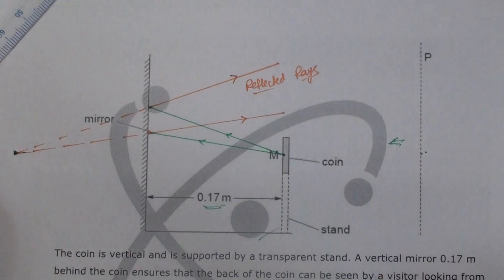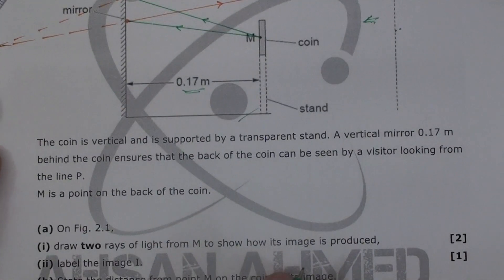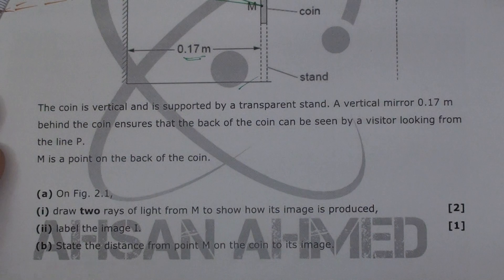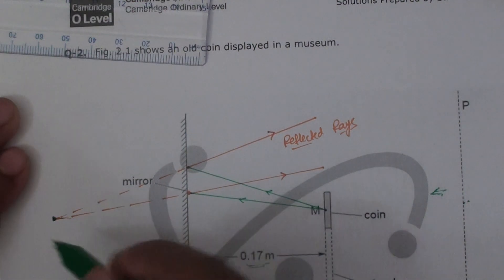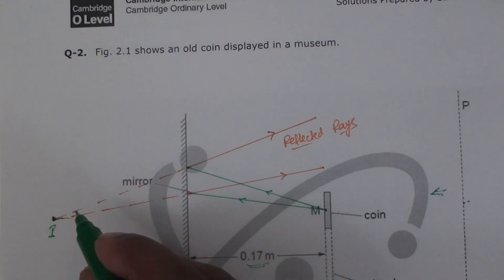So we have drawn, that part is done. Now let's move to the next part, and that is label the image I. In this case, this is image I, right?